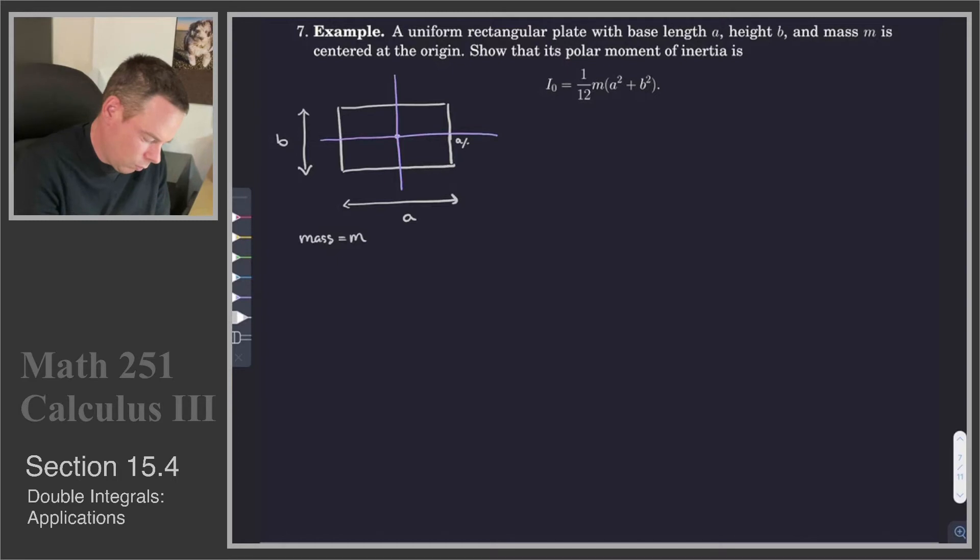We've got our origin centered here. So then I can label some of these points. This would be A/2. This one would be -A/2. This would be B/2. This would be -B/2. And so that's our rectangular plate.